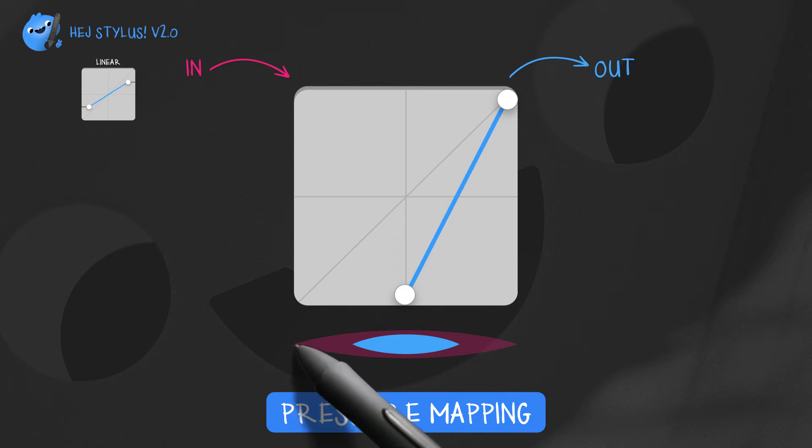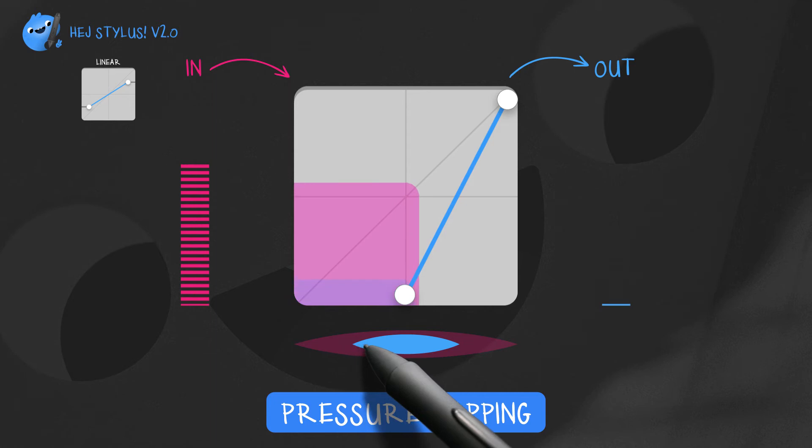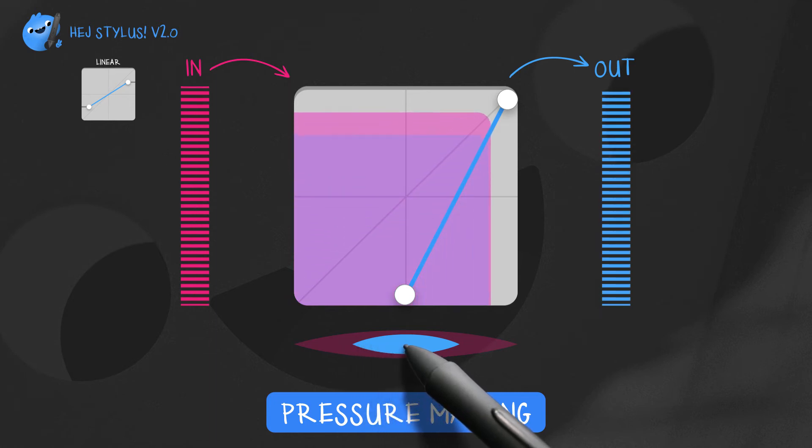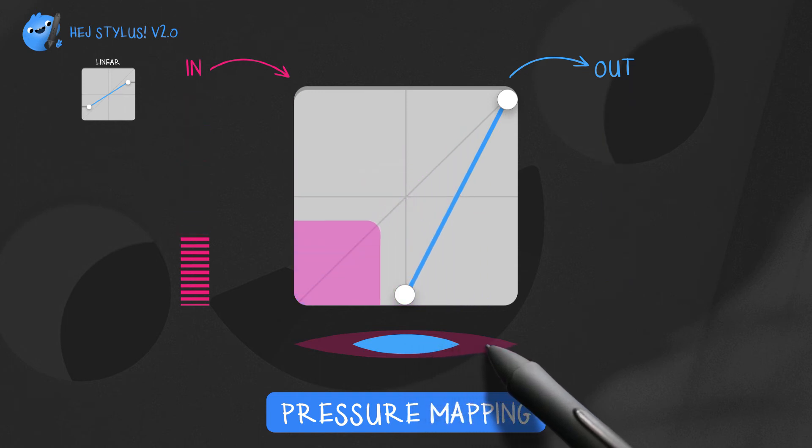In this case, starting with zero pressure, holding until pressure input reaches 50%, now building up, now falling back to zero until 50% pressure input is reached.